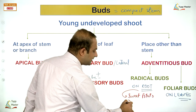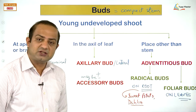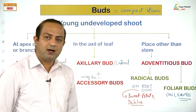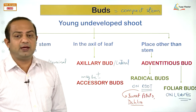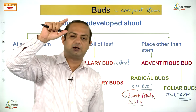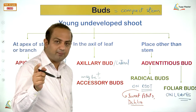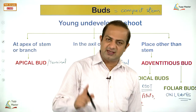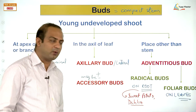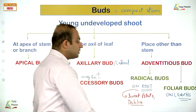Bulbils are fleshy structures with stored food to support the young growing structure until it develops its own leaves. They are comparable to seeds, having reserved food, and giving rise to new plants when separated. In the second modification, the axillary bud becomes woody and pointed — forming a thorn, seen in citrus and bougainvillea — for protection against predation.